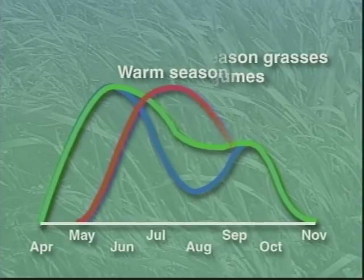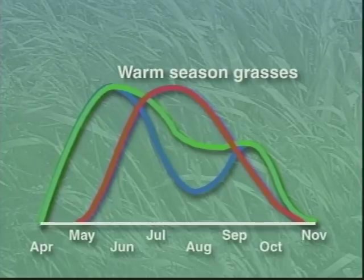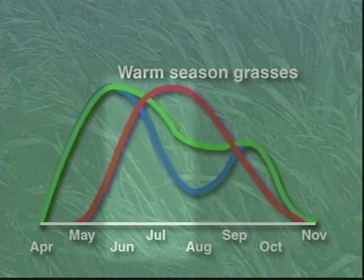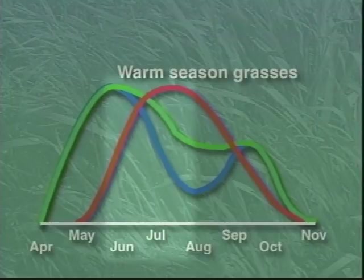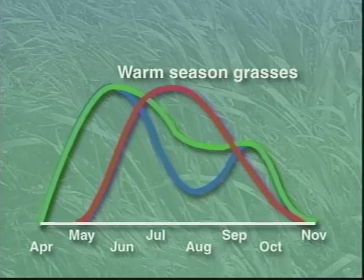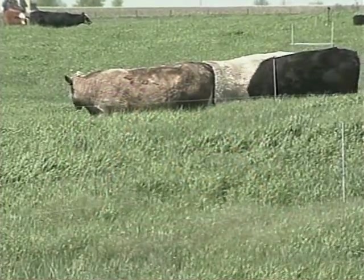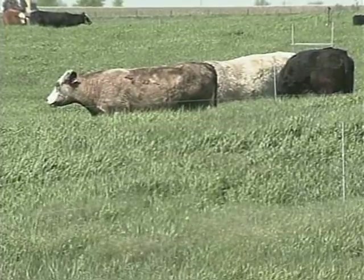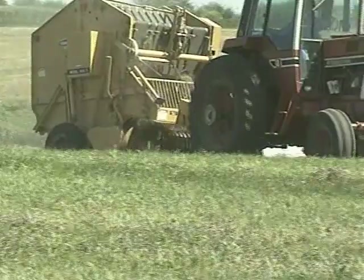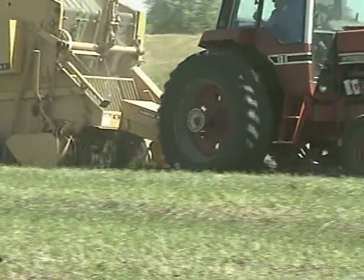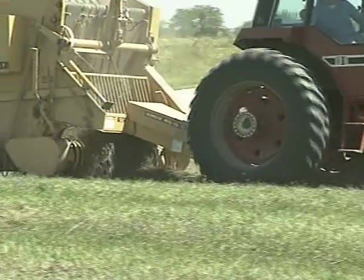Some producers use warm season grasses in a separate pasture to supplement forage availability, particularly during the warm summer months. Warm season grasses produce sixty percent or more of their seasonal yield in June and July, a period when cool season grass regrowth rates are slow. The challenge for grazing managers is to monitor the growth rate and quality of the forage and to harvest it in a timely fashion with grazing animals or machinery, without wasting valuable forage or harming the vigor and growth of the plants.